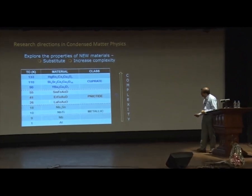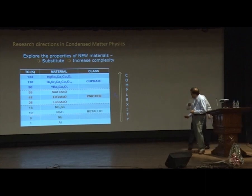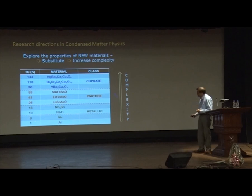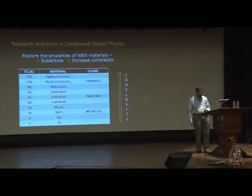When I talk of complexity, what I mean is that if you take simple elements like aluminum or niobium, the TC is usually below 10K. If you want TC in a slightly higher range, you have to go to two elements, then three, four, five elements, and the TC sort of goes up monotonically the more complex the system is.